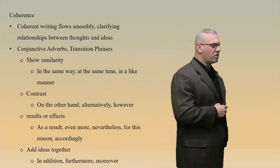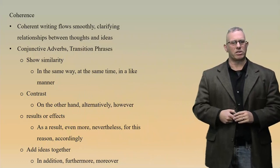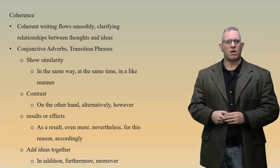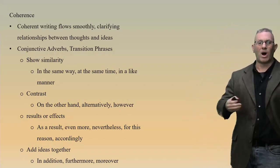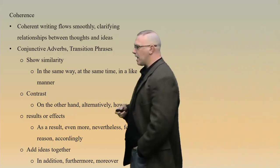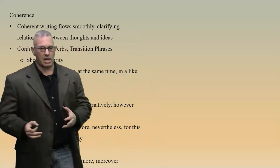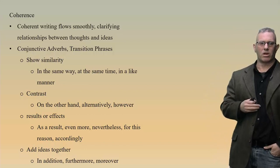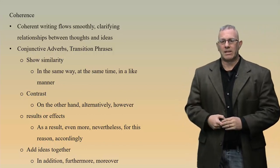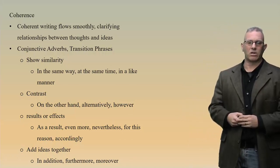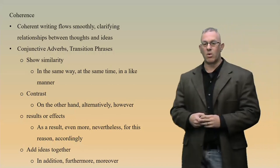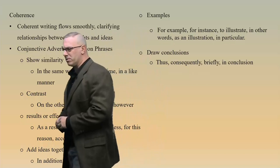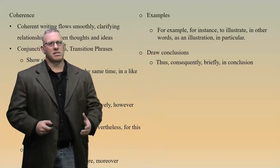Let's talk about conjunctive adverbs and transitional phrases. On my grading rubric, I either circle these as needing work or check them off as satisfying the requirement. What is a conjunctive adverb or transitional phrase and why do we need to use them? These words help show the relationship between one thought and another. Transitional phrases that show similarity include: in the same way, at the same time, in a like manner. To show contrast: on the other hand, alternatively, however. For results or effects: as a result, nevertheless, for this reason, accordingly. If you Google a list of conjunctive adverbs or transitional phrases, there are dozens and dozens of them.